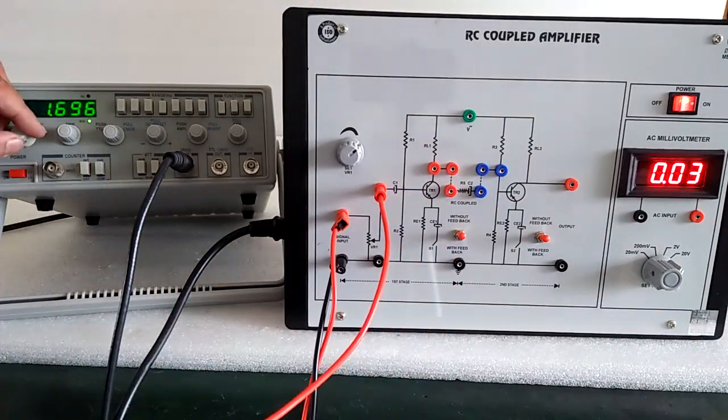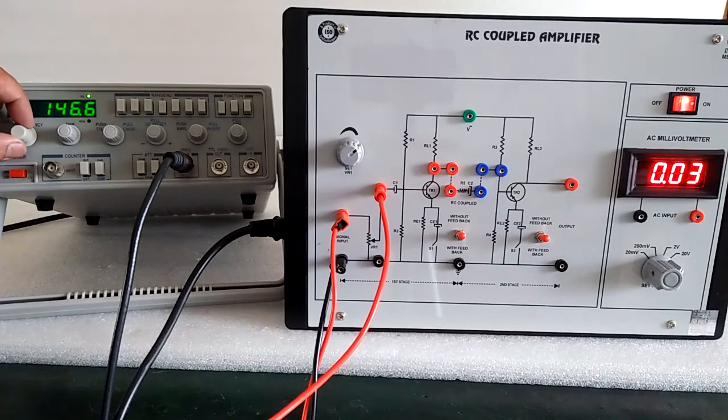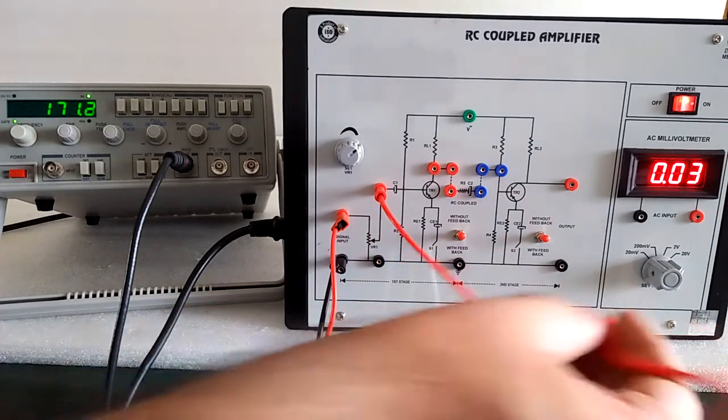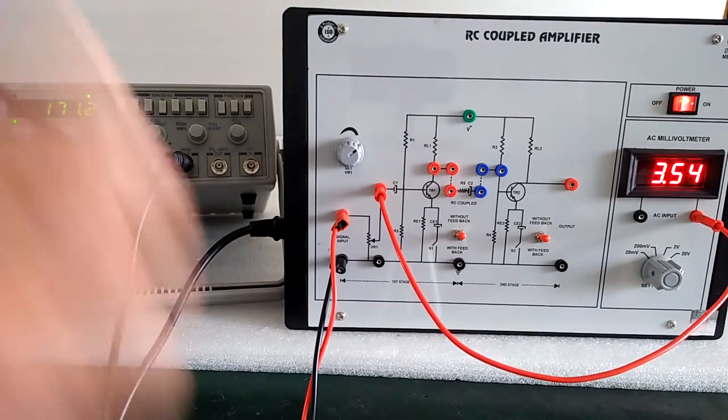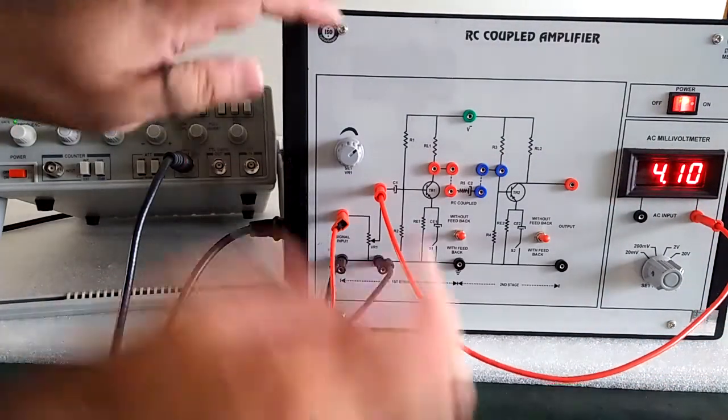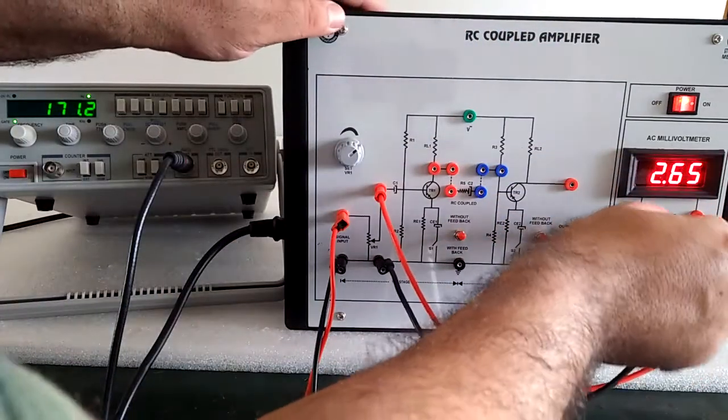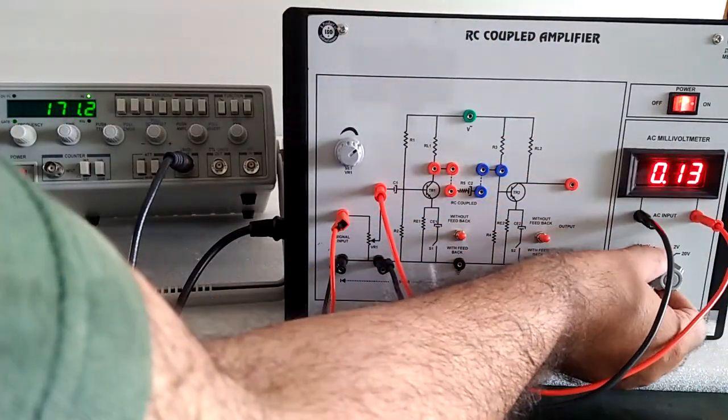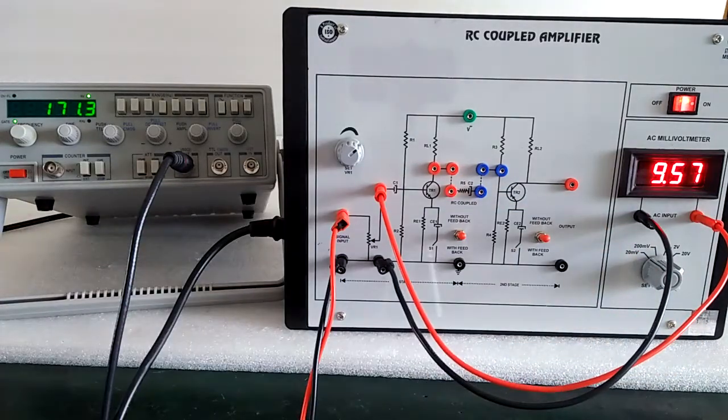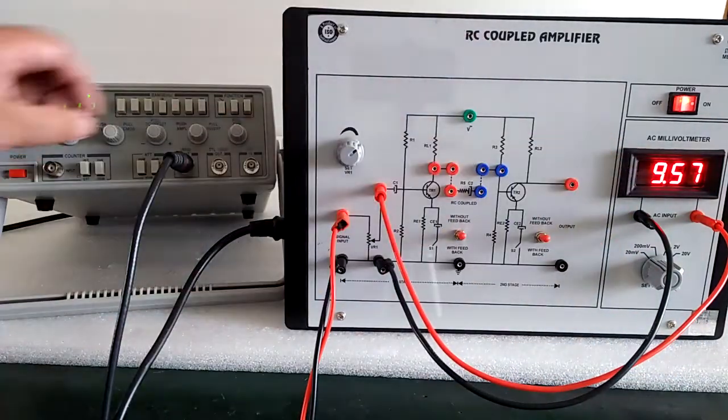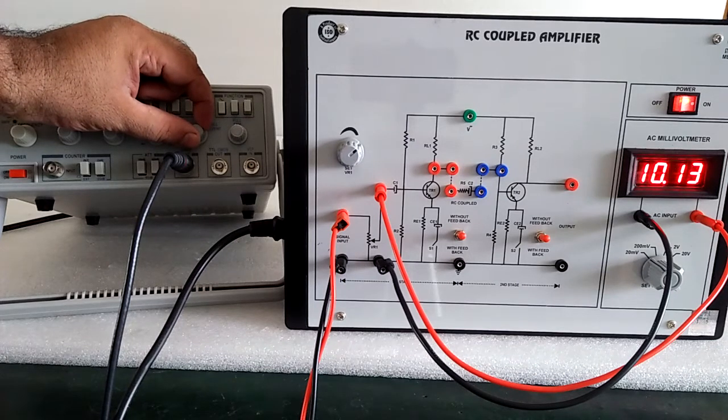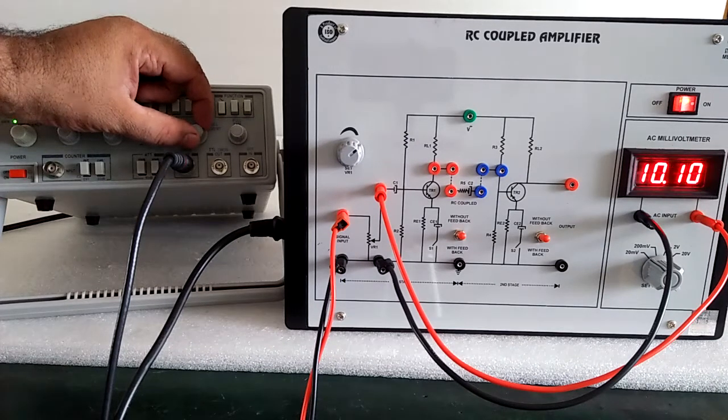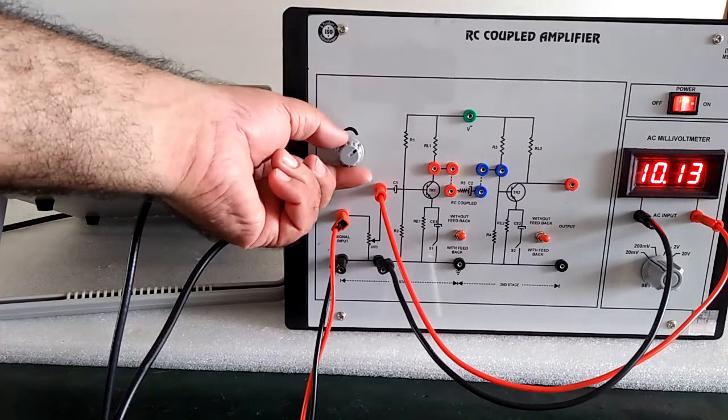Select the frequency, 100 hertz, and firstly we see the input which we give to the circuit around 10 millivolt. Select the selector switch range accordingly, and with the help of the amplitude of the function generator, you can get it 10 millivolt or with the help of this potentiometer.